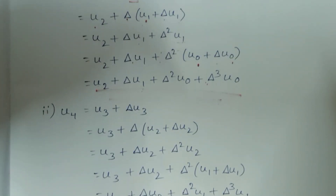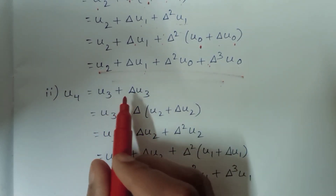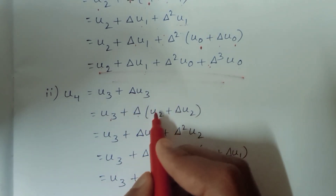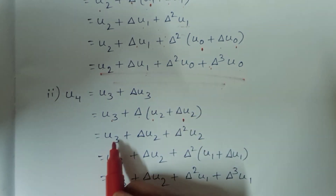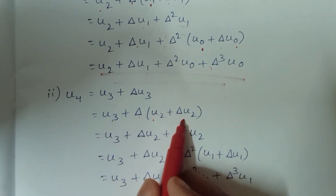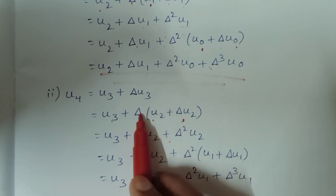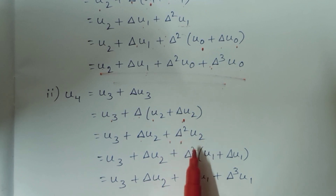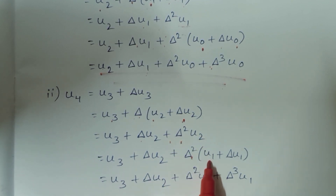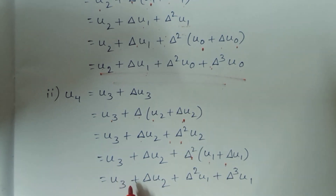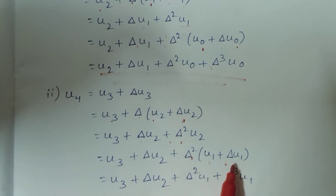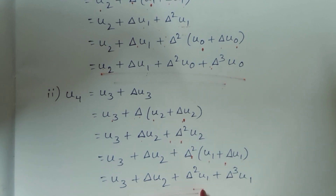The second problem is done the same way. For u4: u4 equal to u3 plus delta u3. Substituting u3, then delta u2, then delta squared u1, then delta cubed u1 to get the required answer.